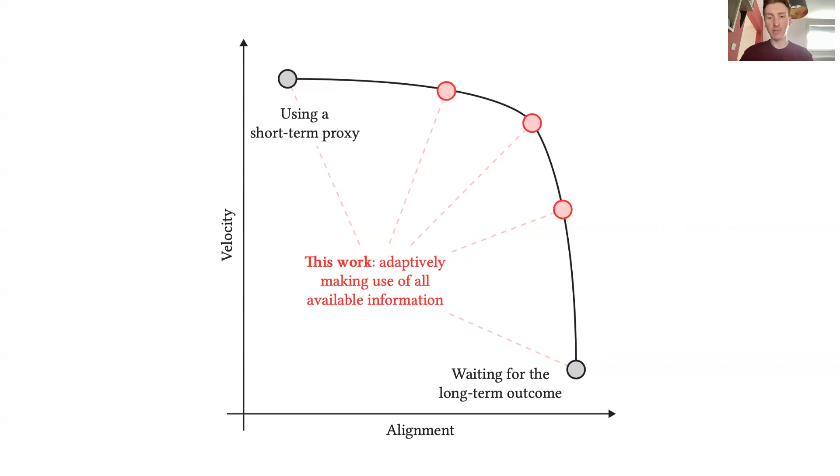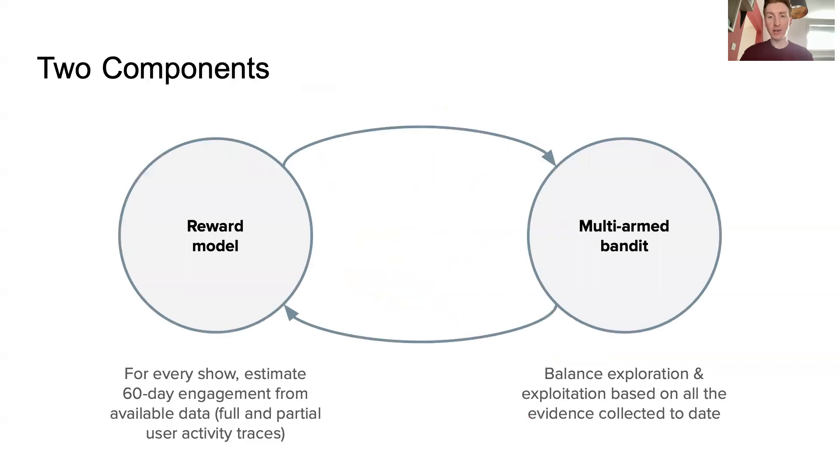In this work, we present the impatient bandit, a broadly applicable algorithm which adaptively makes use of all available data at any given time aligned for rapid, well-informed recommendations. The approach has two key components: the reward model and the algorithm itself.